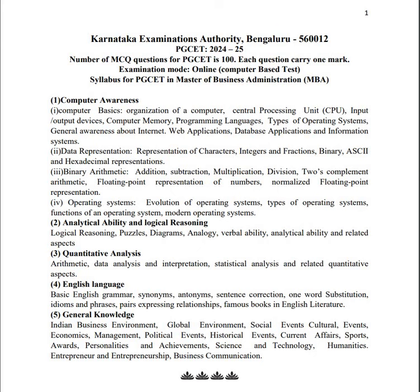Hello guys, today we are going to discuss PGCET 2024-25 for MBA. Let's discuss what sections we have and what topics are to be covered. Fundamentally, there will be four sections in MCQs — there is no theoretical part, each question carries one mark and it's 400 marks total. The four sections are: first, computer awareness; second, analytical ability and logical reasoning; third, quantitative analysis; fourth, English language.